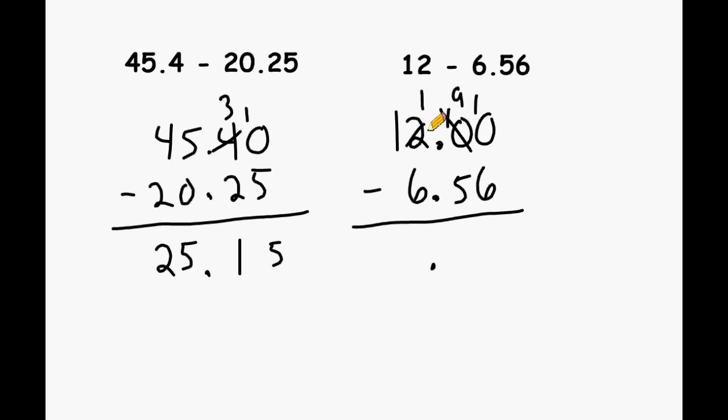But notice we cannot subtract 6 from 1. So now this 1 we have left must turn into an 11. We borrow 1 from this 1 and that turns into a 0. Now we can take 6 away from 10 and that leaves us with a difference of 4. In this column we have 9 take away 5, that's a difference of 4 as well. And in this column we have 11 take away 6 and that leaves us with 5. So 12 take away 6 and 56 hundredths is equal to 5 and 44 hundredths.